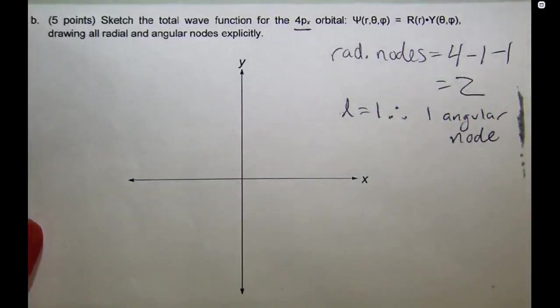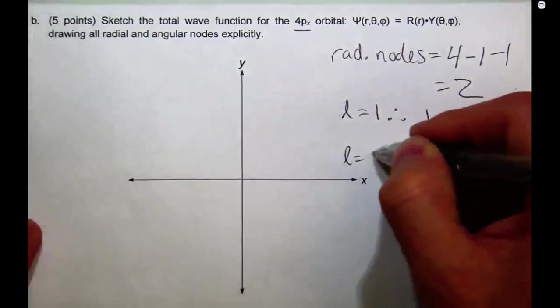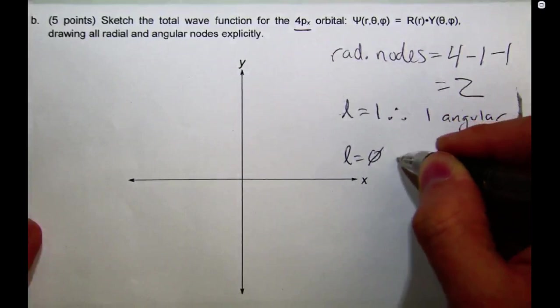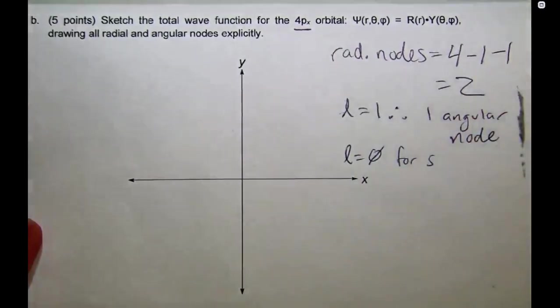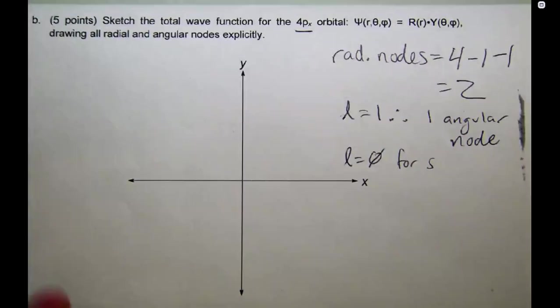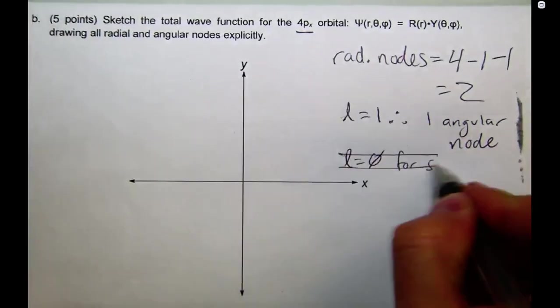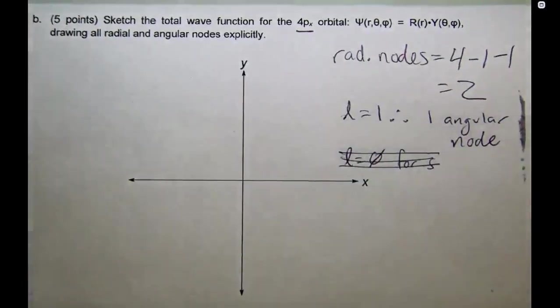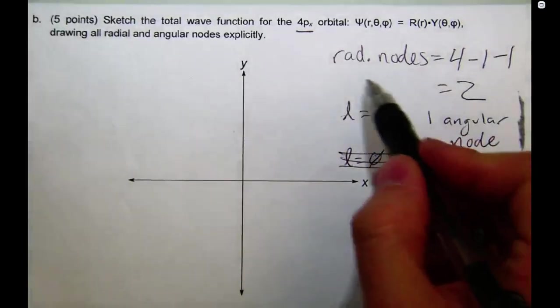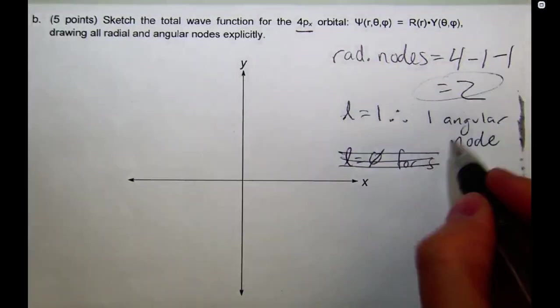If you recall from the discussion, we talked about the angular nodes. A few of you asked about whether there were angular nodes in an s orbital. So, L equals 0 for an s orbital. So, no, there are no angular nodes, and that's why it has a perfectly spherical shape. Not actually relevant for answering this question, but just a follow-up note. Alright, so now I've got, I know that I have two radial nodes, one angular node.